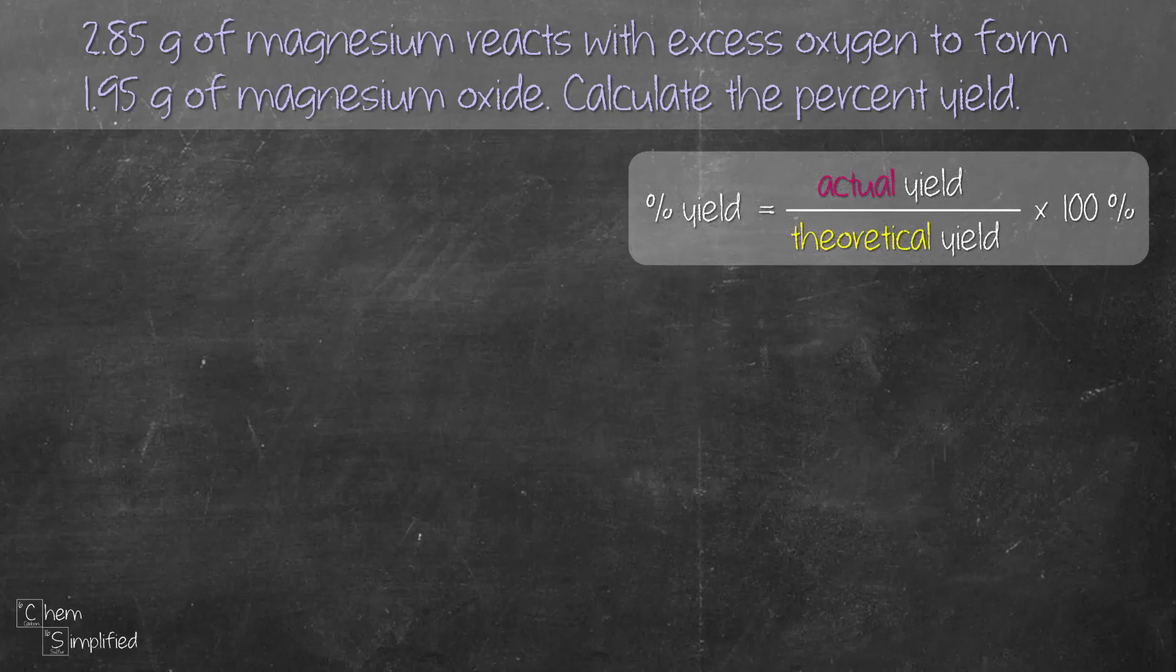Here's the formula. The actual yield is given by the question, which is 1.95 grams. The theoretical yield is not given, so we need to figure that out. We're going to have to find the mass of magnesium oxide, MgO.